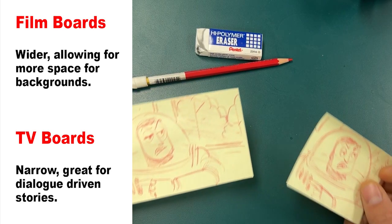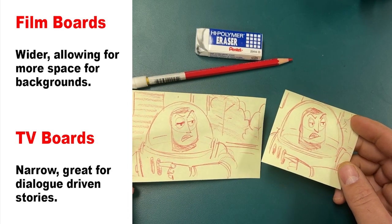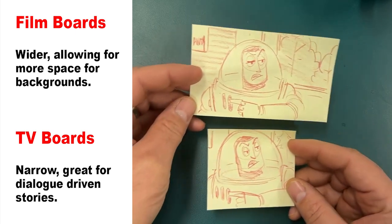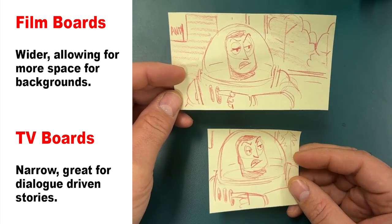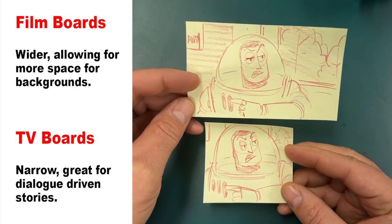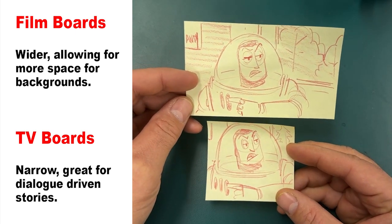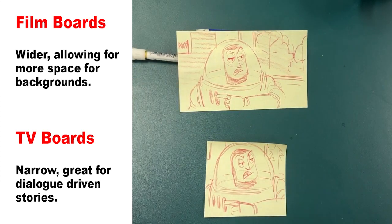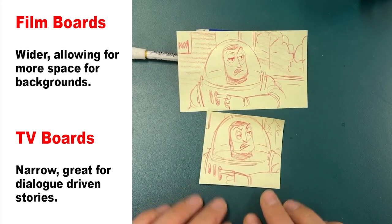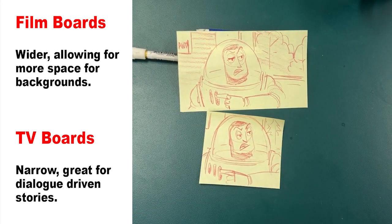Before ending this video it's also important to note that TV and feature film boards have a different aspect ratio. You'll need to use wider storyboard panels if you board for film, and narrow for TV.